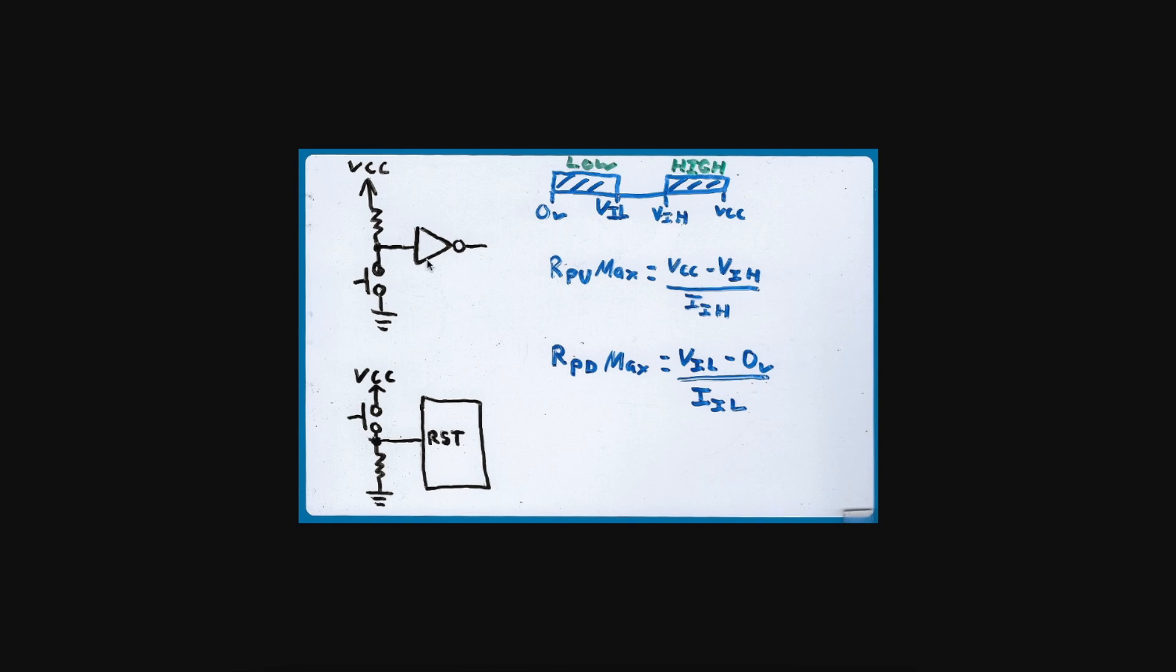The input of a logic circuit needs to see either a high or low, which will be VCC or ground for that circuit.